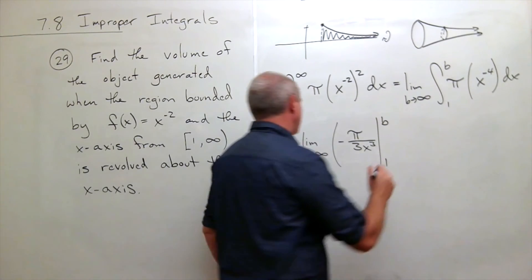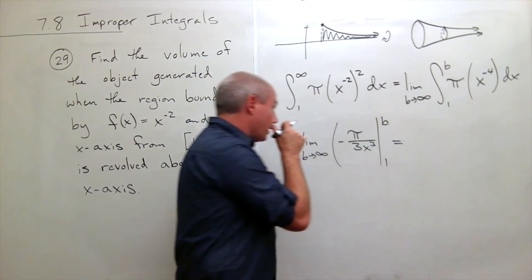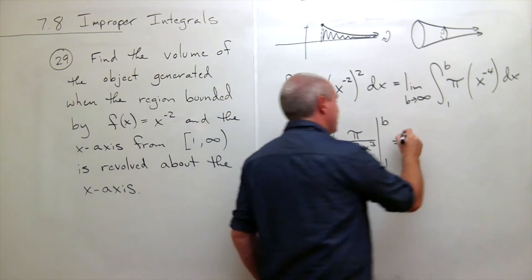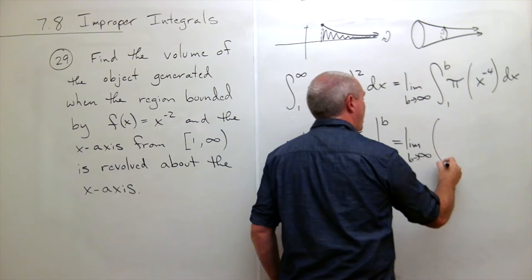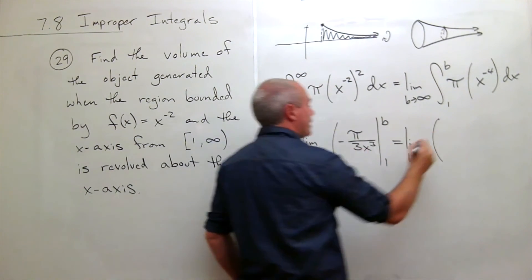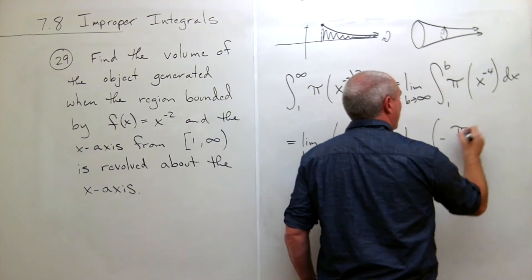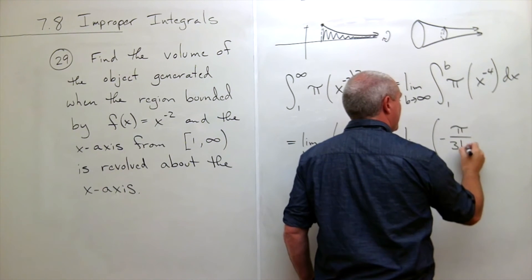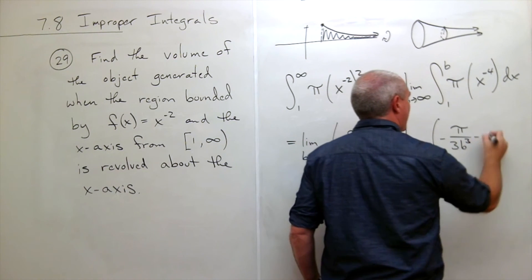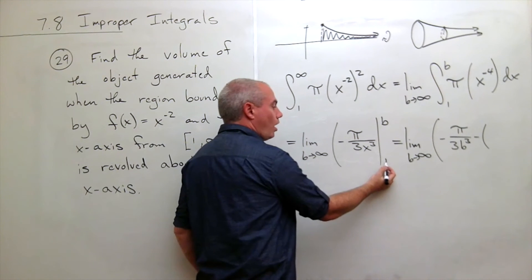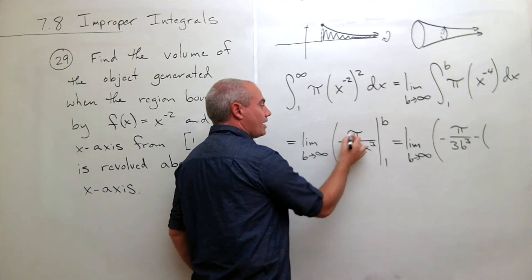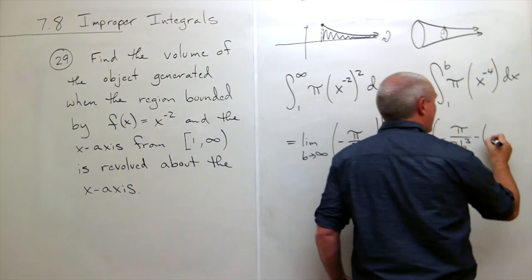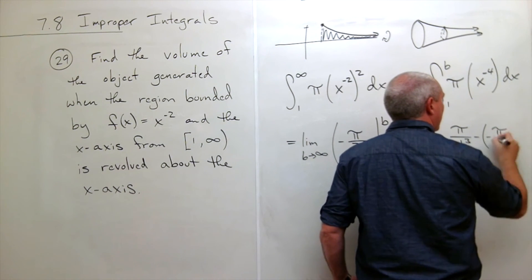Let's plug things in. If I plug in b, I get, I still have my limit, b goes to infinity of, plug in b and I get negative pi over 3b cubed minus, now I plug in 1, if I plug in 1 for x here, I just get minus pi over 3.